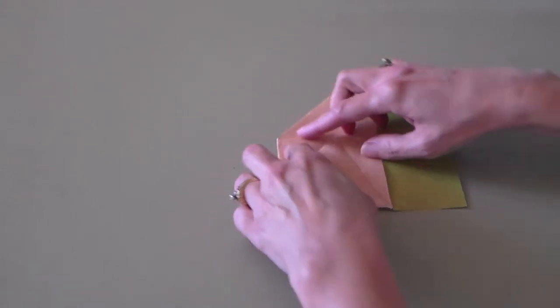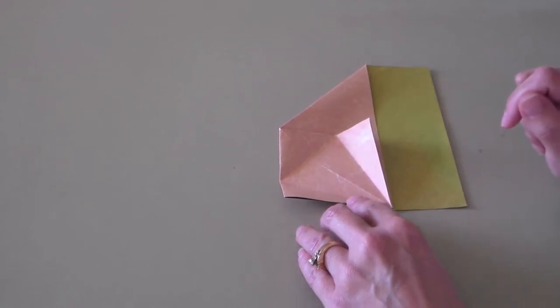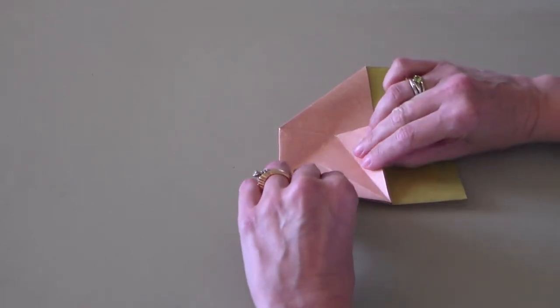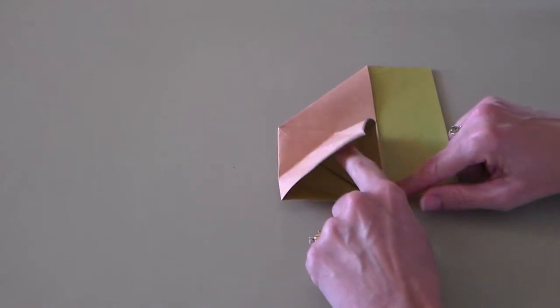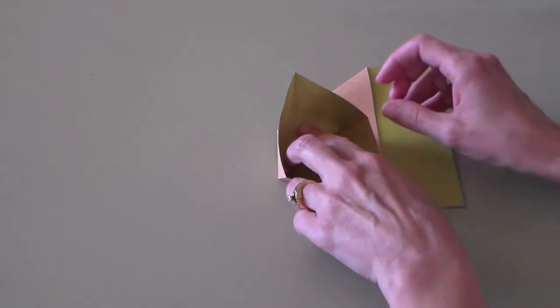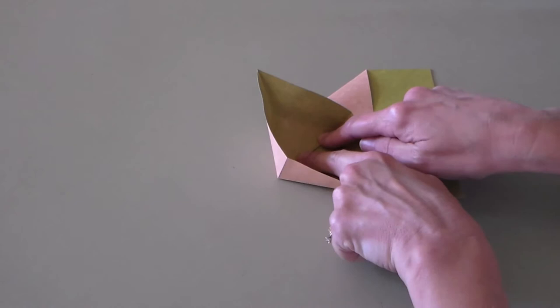Now we're going to open this up. And you can see we've got fold lines for a triangle in here. To continue the bird fold, you want to lift up this top layer. And using this double-sided paper helps you to see it's got two different colors. Lift it until you get to that crease we just made on the triangle. So push that back.